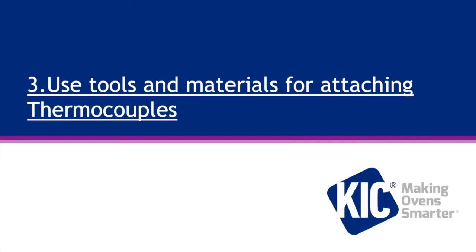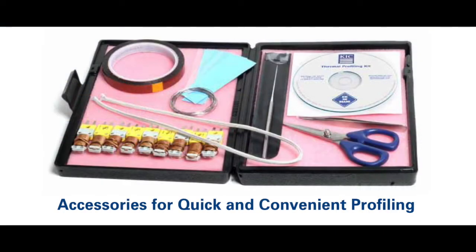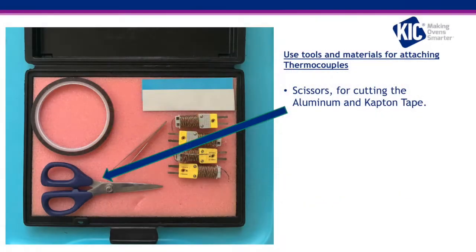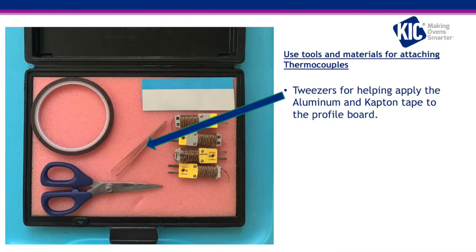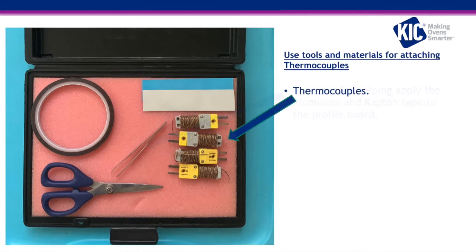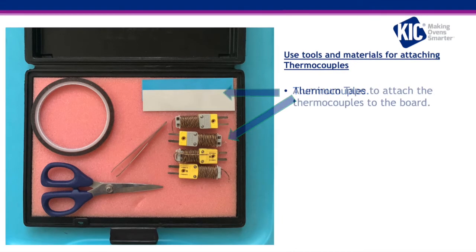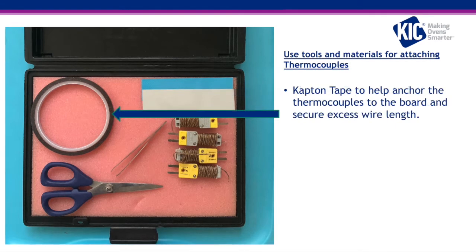Use tools and materials for attaching thermocouples. Here are some suggested items for attaching your thermocouples to your profile board, as seen here in a KIC accessory kit: scissors for cutting the aluminum tape and Kapton tape, tweezers for helping apply the aluminum and Kapton tape to the profile board, thermocouples, aluminum tape to attach the thermocouples to the board, and Kapton tape to help anchor the thermocouples and secure excess wire length.